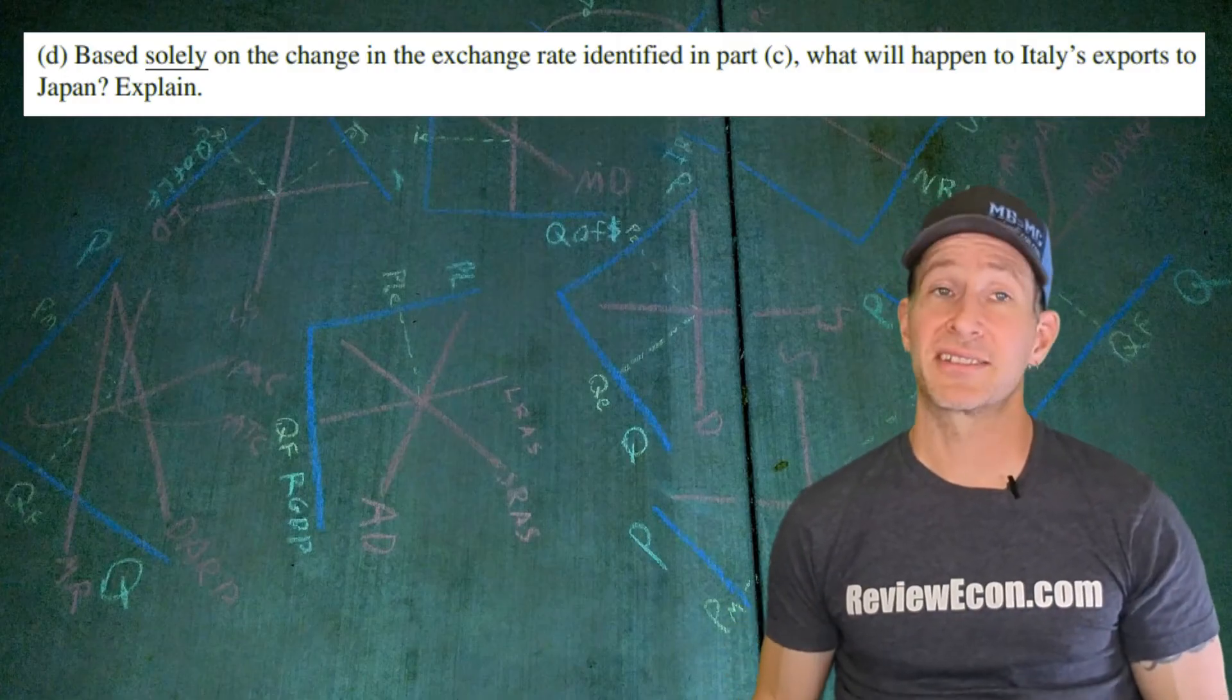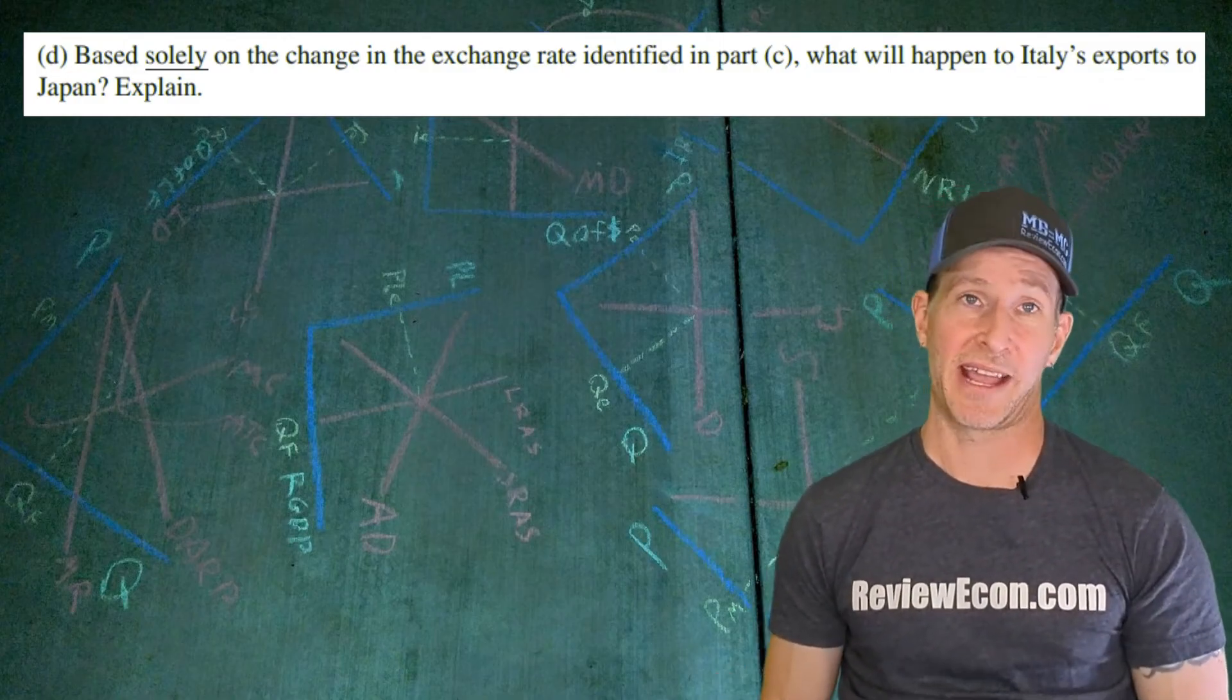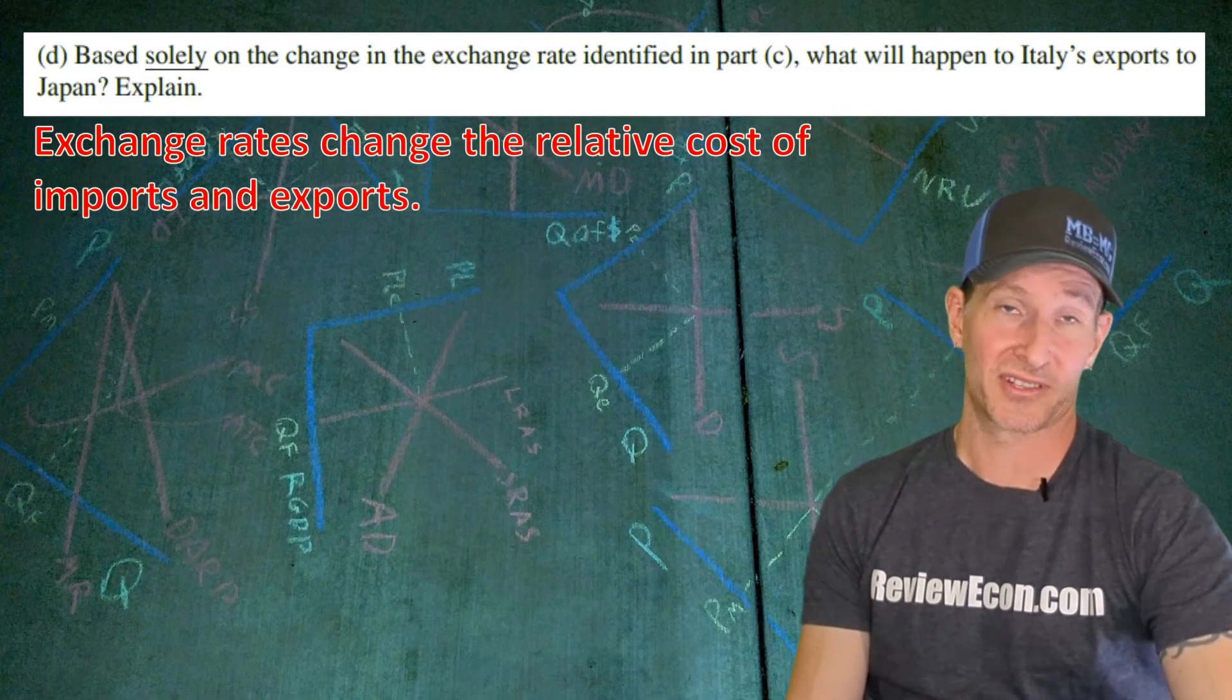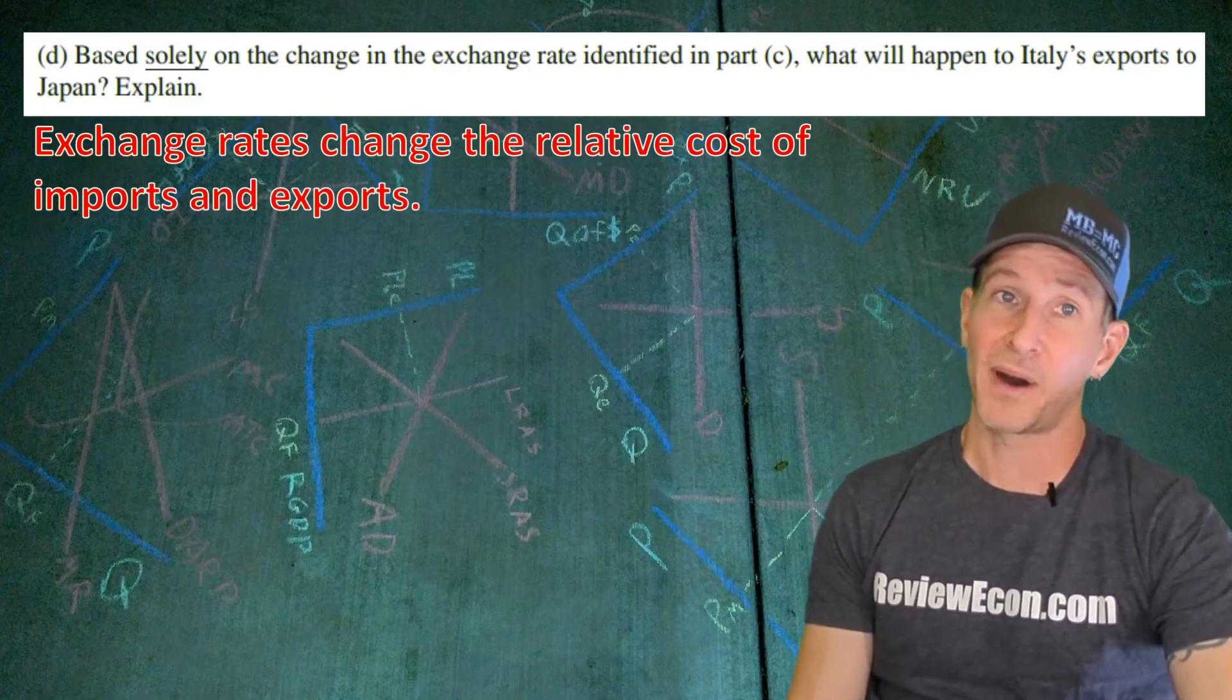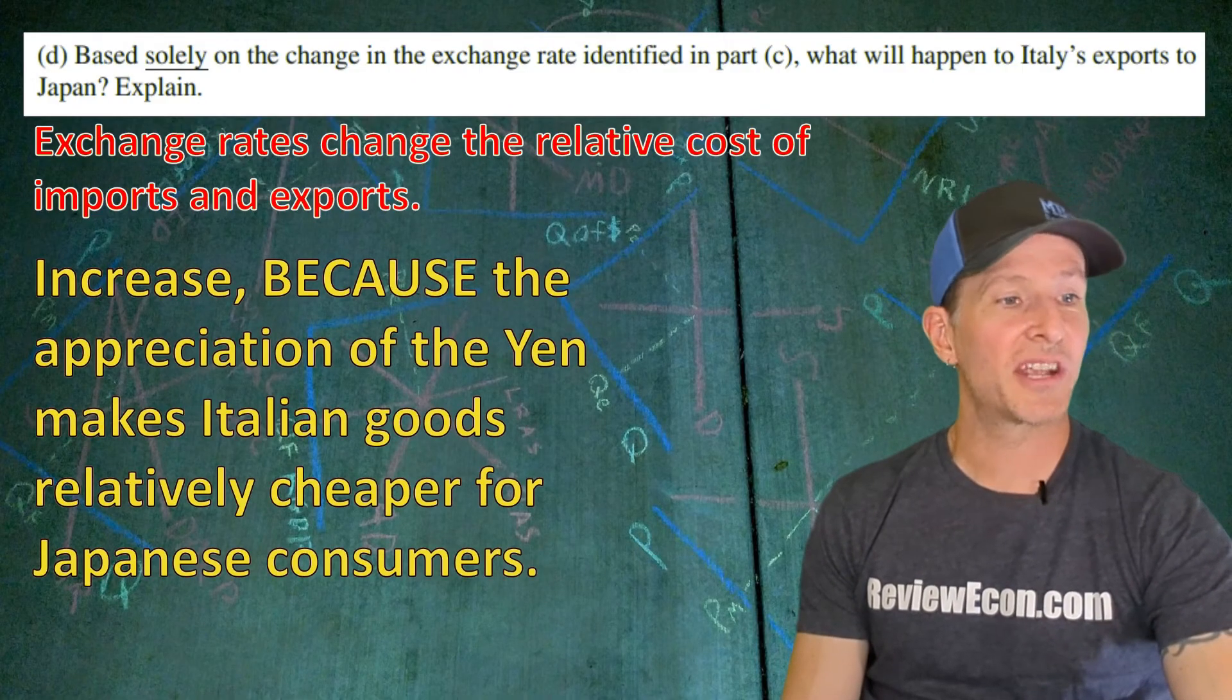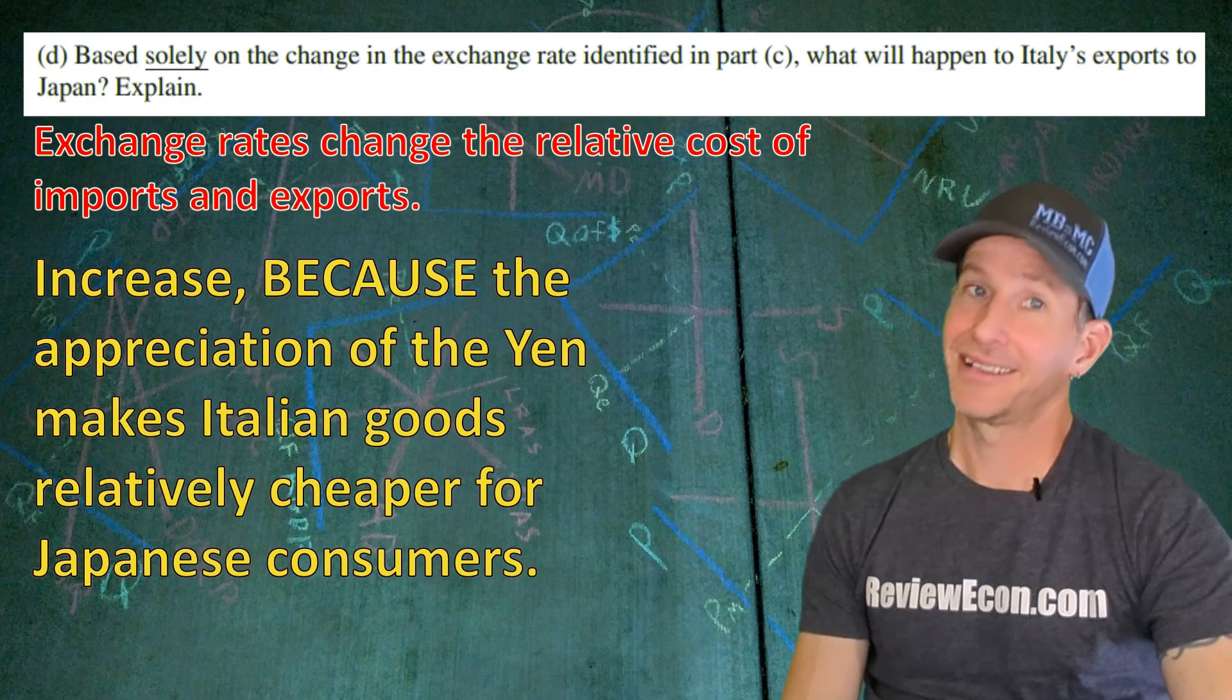Finally, for part D, we have to say what will happen as a result of the exchange rate change that we just identified to Italy's exports to Japan. In order to answer this question, it's helpful to remember that the exchange rate changes the relative costs of imports and exports. Since the Japanese yen has appreciated, it's going to take fewer Japanese yen to buy the Italian goods. And that leads us to our answer here: increase. Because the appreciation of the Japanese yen makes Italian goods relatively cheaper for Japanese consumers. If you've answered something like that, you get yourself a point.